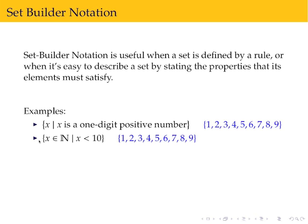Set builder notation is very useful because it can say what rule you're looking at. But these two things are equal to one another. So if I gave you a question of express the set 1, 2, 3, 4, 5, 6, 7, 8, 9 with set builder notation, both of these would be correct.